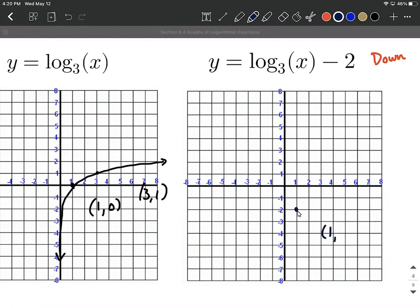And I'll try to list these out as we go. 1 negative 2 is one of these key points. The other one was at 3,1. So as I pick that up and move it down 2 units, it's going to go to 3 negative 1.